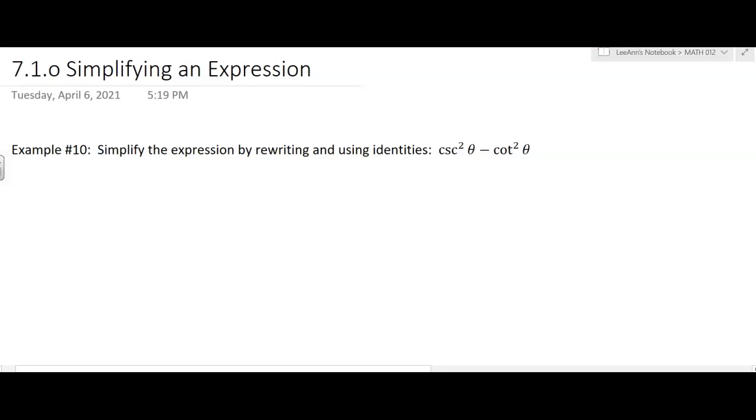So in this problem, it says simplify the expression by rewriting and using identities. So you're thinking, well, I've got cosecant squared and cotangent squared, it's the difference of squares, I'm going to want to factor it.